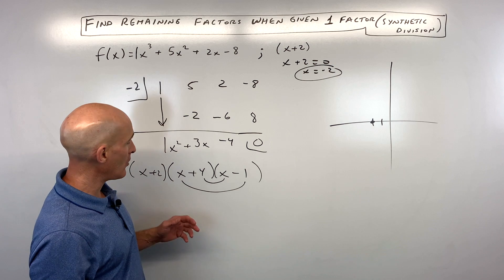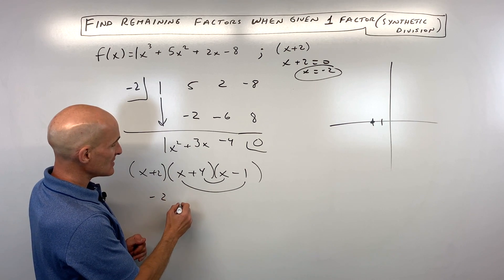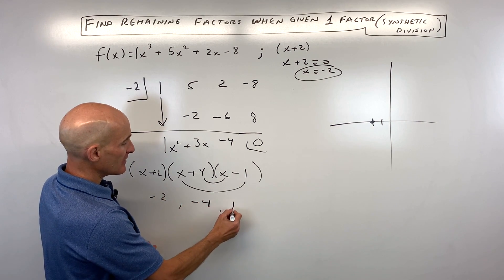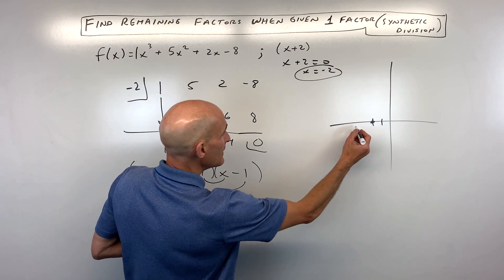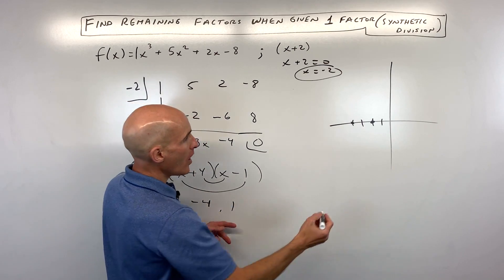If you wanted to graph it now by setting all these factors equal to 0, you get the zeros or the x-intercepts. So we know it's going to cross at negative 2, negative 4, and positive 1.